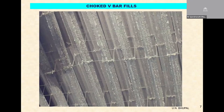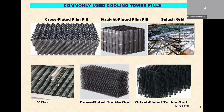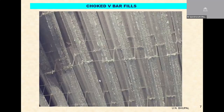I'll show you instances where the V-bar fill — which was not supposed to choke under any circumstances — in one of the NTPC projects, the entire V-bar, which has seven by seven rhombus-shaped openings on its body, has all those openings completely choked like a cotton-like structure. It looks like silk and cotton because it is microbial growth.